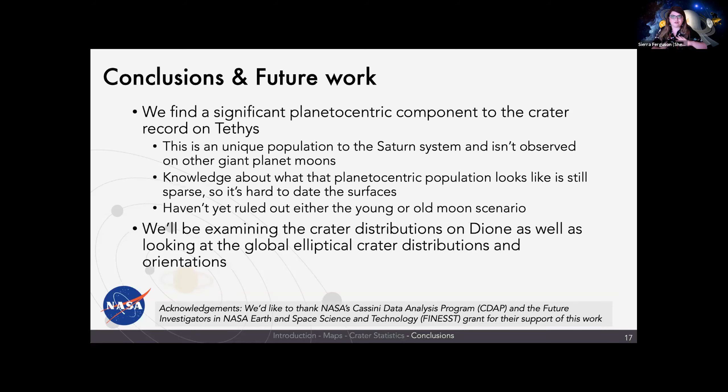We're finding that a significant component of the crater record was caused by planetocentric debris, and it's more of a unique population to the Saturn system, not what was described at Neptune. The bombardment environment at Neptune is drastically different than what is happening at the Saturn system. Knowledge of this planetocentric population is still sparse and needs more dynamical modeling. We haven't yet ruled out this old moon or young moon scenario or determined what fraction of craters are heliocentric versus planetocentric. To do this, I'll be doing a similar study on Saturn's moon Dione and looking at elliptical craters and their orientations across the midsize satellites. Thank you.